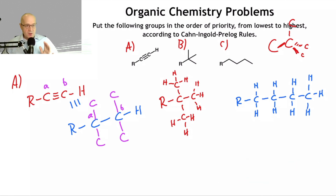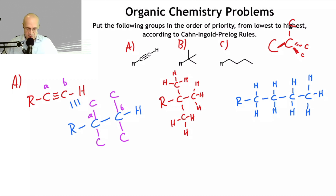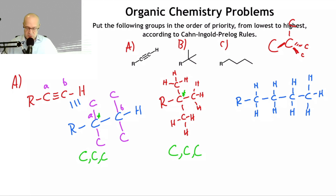In the event of a tie, Cahn-Ingold and Prelog say to keep jumping out until you find a difference. So from the first carbon we can jump out to carbon, carbon, and carbon. From the second carbon — carbon, carbon, and carbon. From the third — carbon, carbon, and carbon. We're still tied, so we'll have to keep working.